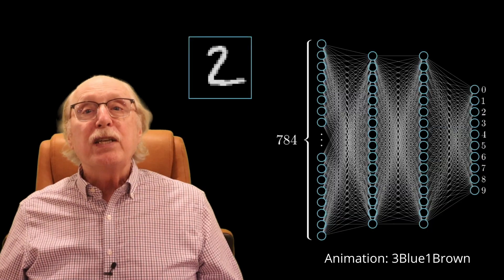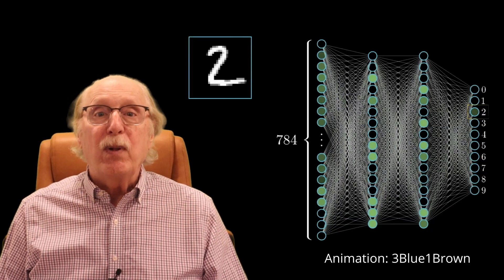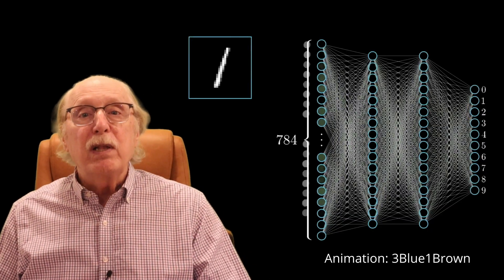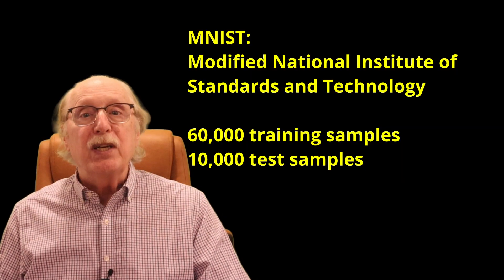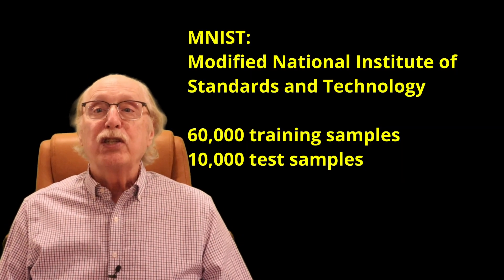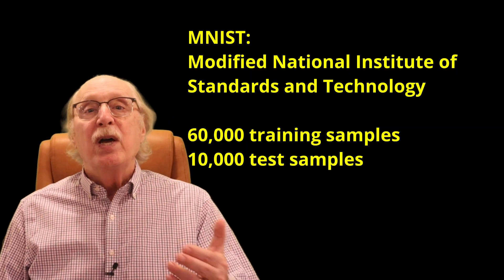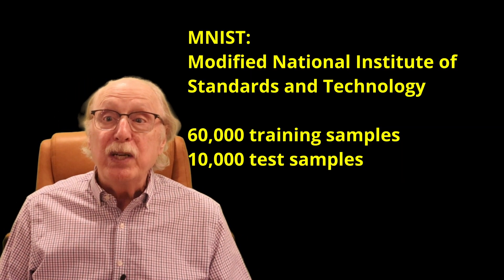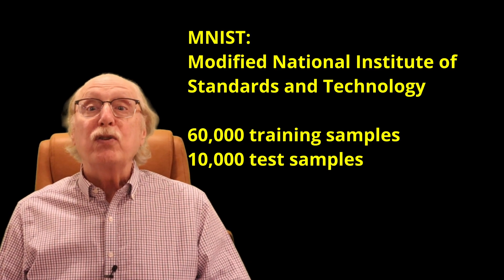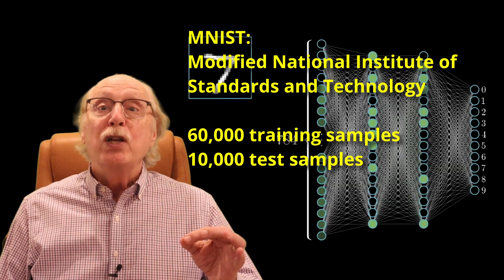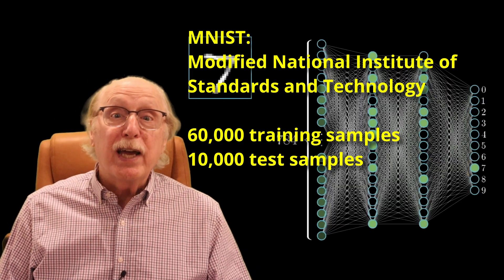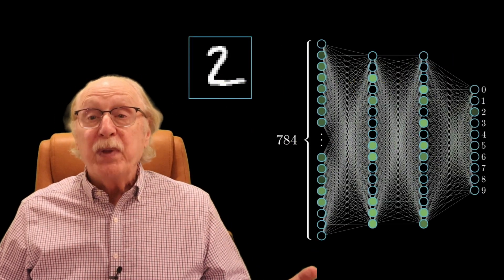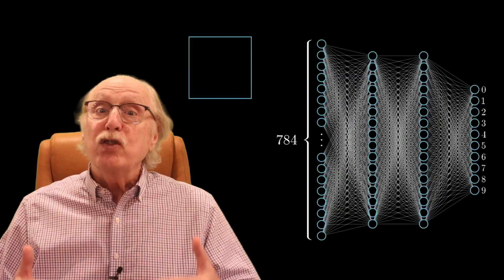Take digit recognition as an example. One of the classic machine learning datasets is MNIST, a collection of handwritten digits. A neural network trained on MNIST learns to map the pixels of an image to one of ten categories, zero through nine. It gets this right most of the time.